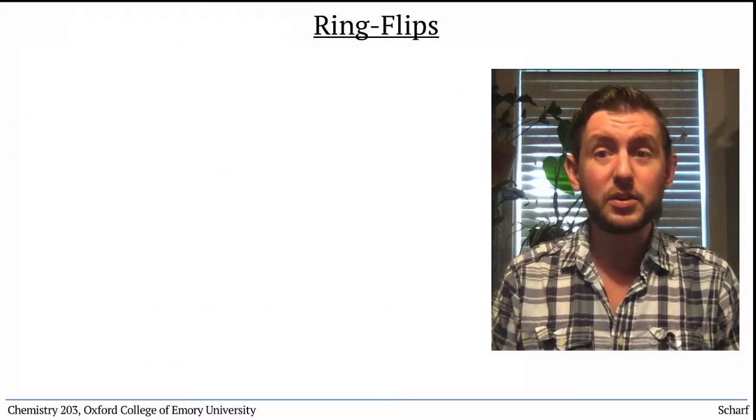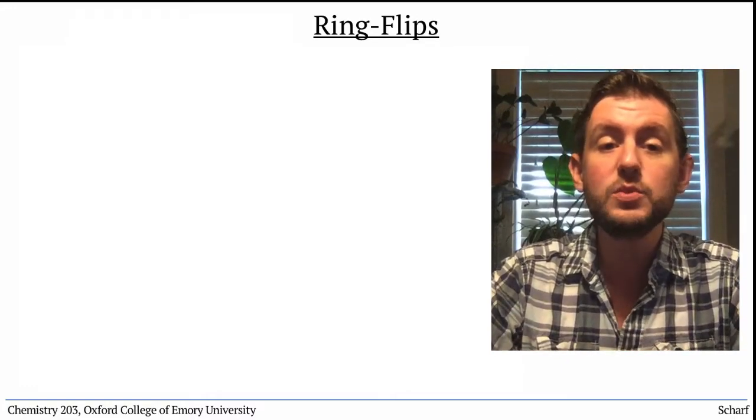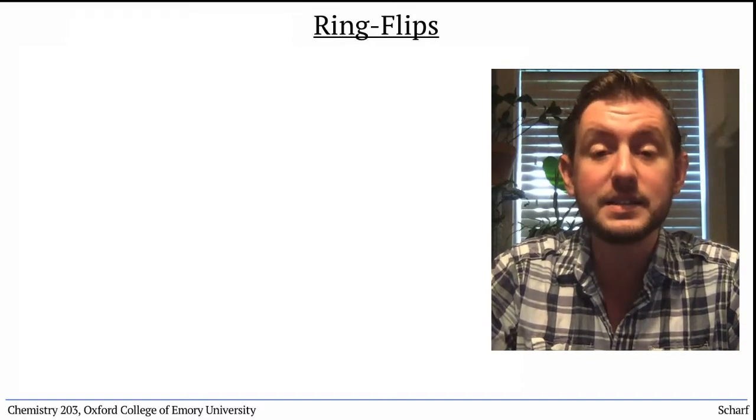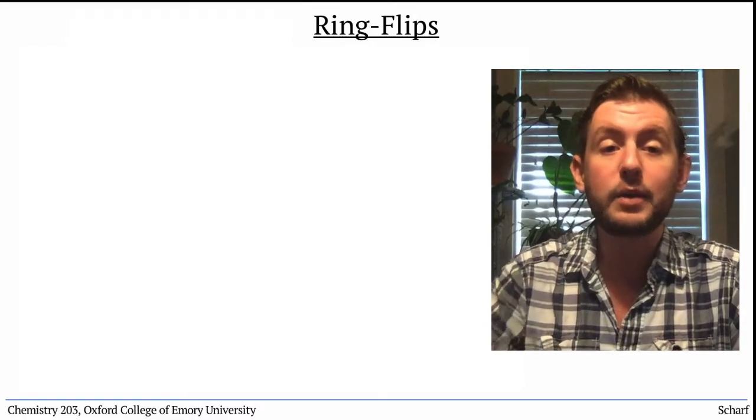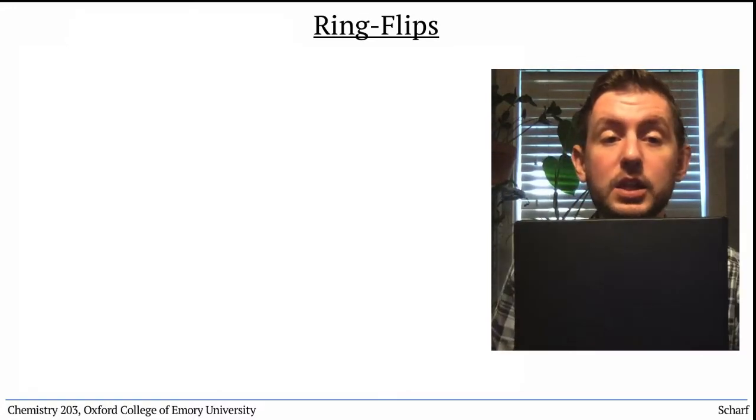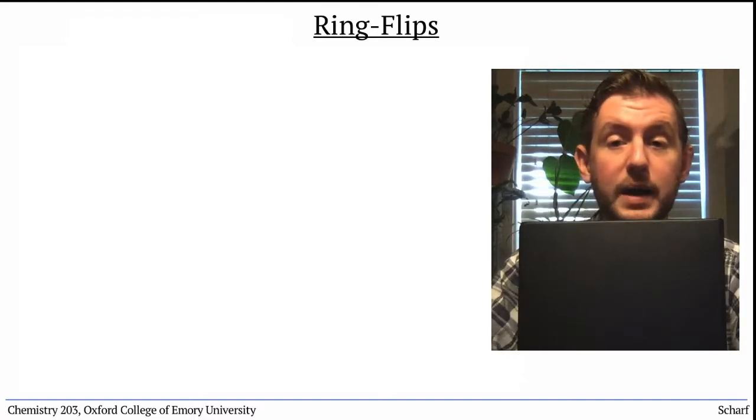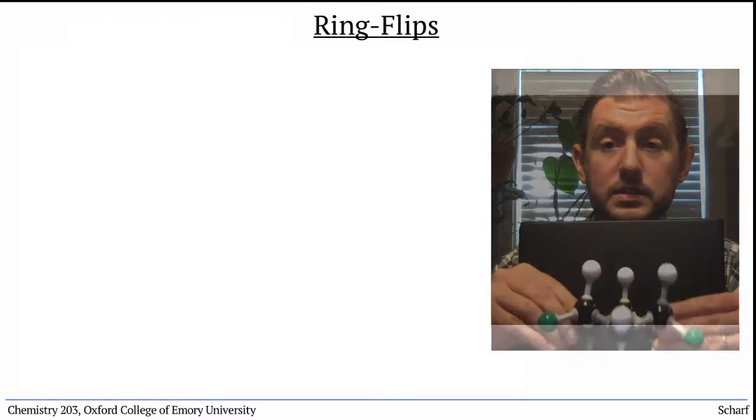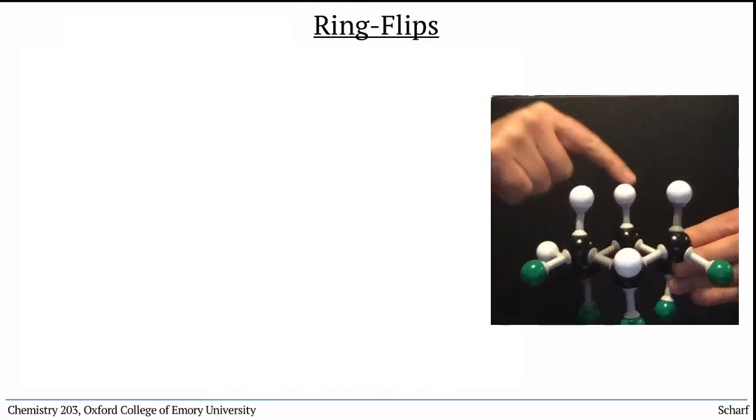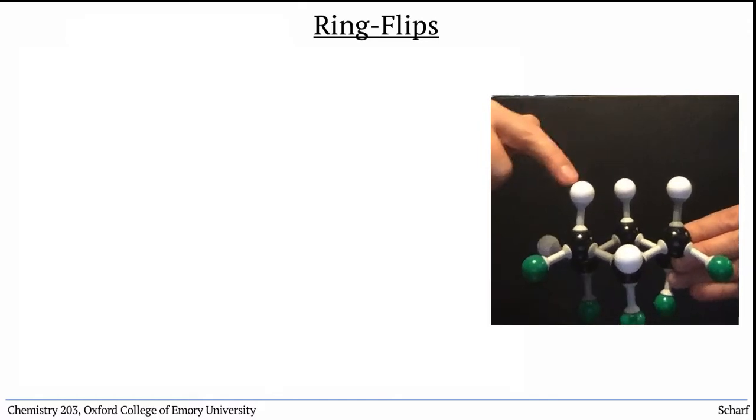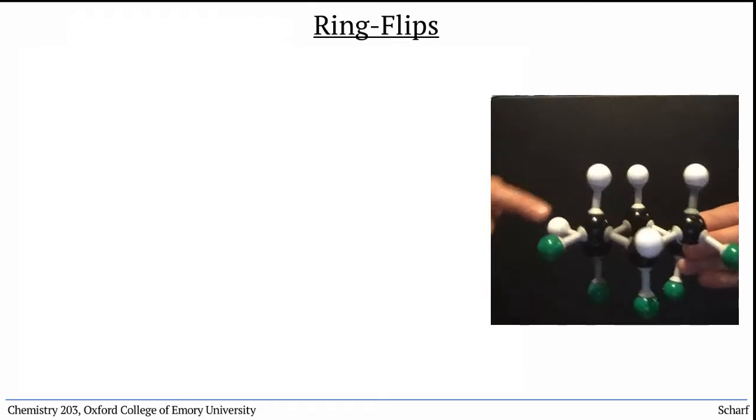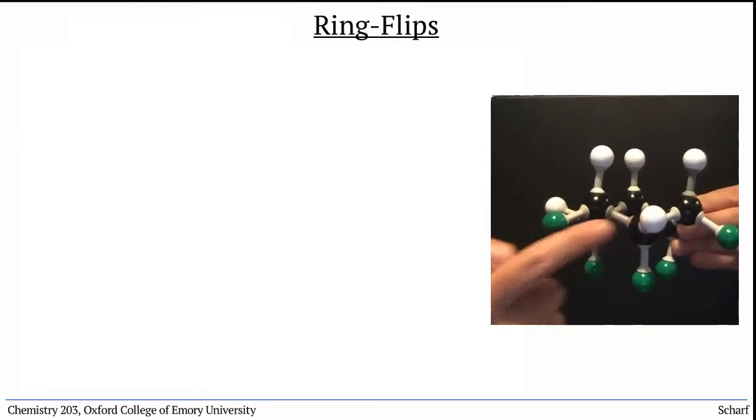Why do we care about all this? Well, it turns out that substituents on a cyclohexane ring behave and react differently when they are axial versus when they are equatorial. Axial substituents are physically relatively close to other nearby axial substituents. On my model, the axial substituents are about 6.5 centimeters from each other, while equatorial substituents are closer to 8 centimeters from their nearest neighbor.